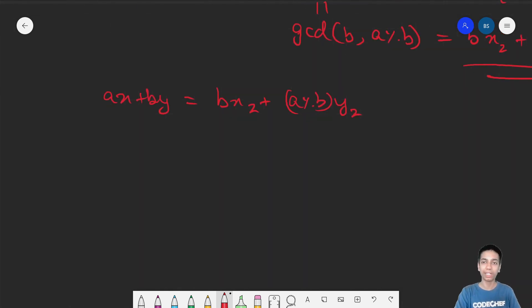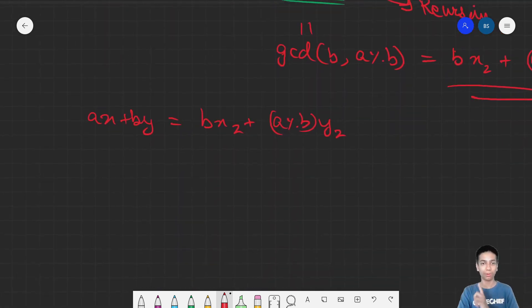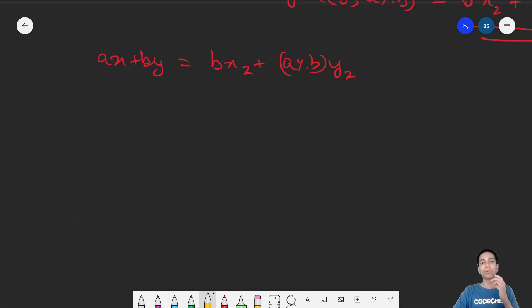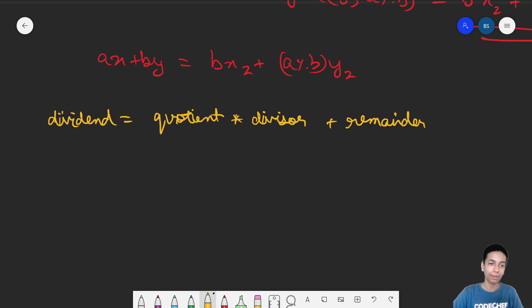This is what we have clearly ended up with by representing GCD of A, B as GCD of B, A mod B. Now, we have that A mod B is something that is not very defined. Remember this equation from class 4 that dividend is nothing but the quotient times the divisor plus the remainder.